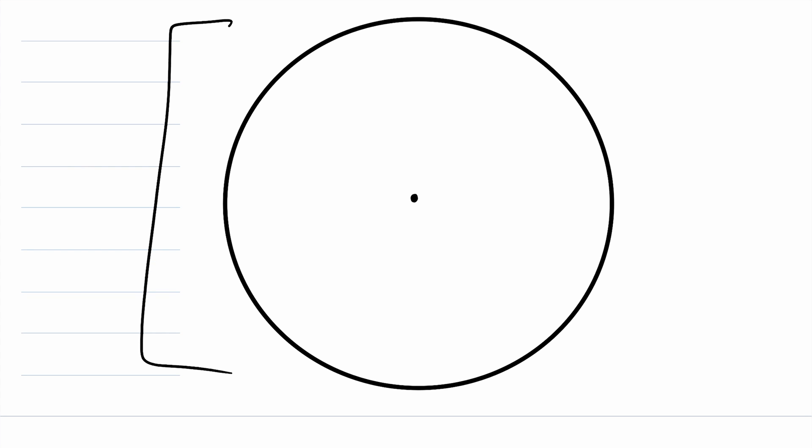So here is the beautiful circle we'll be working with and here is the center of the circle. A chord of a circle is quite simply a line segment whose endpoints both lie on the circle. So here we have an example of a chord in blue. You can see that both endpoints of this segment lie on the circle.